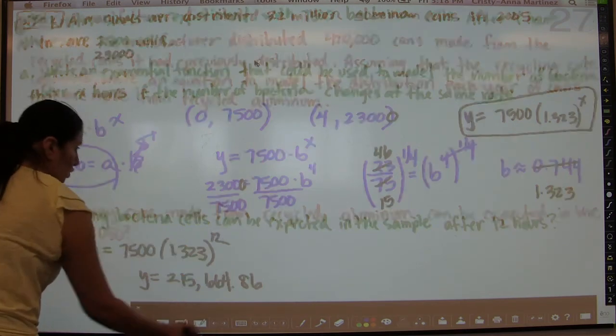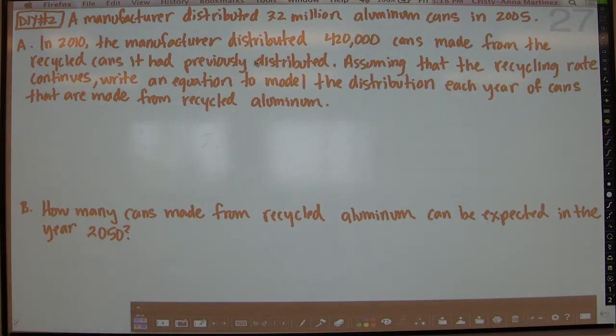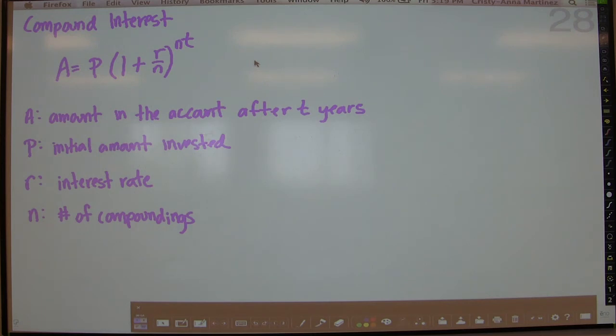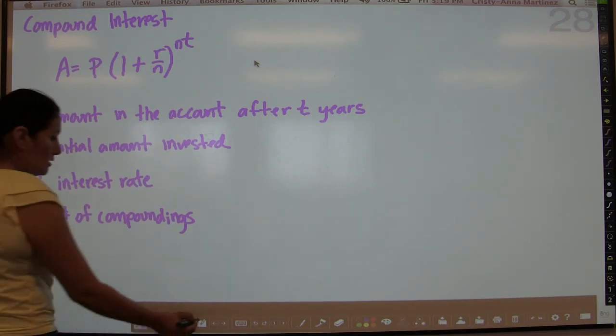So now we're going to have you do this example, and then we're going to move on to compound interest, which is an application of exponential functions which we've already done in the past in Algebra 1. But just in case you've forgotten, here's our formula. The A is the amount in the account after t years. P is the initial amount that you invest. R is your interest rate. And N is the number of compoundings.